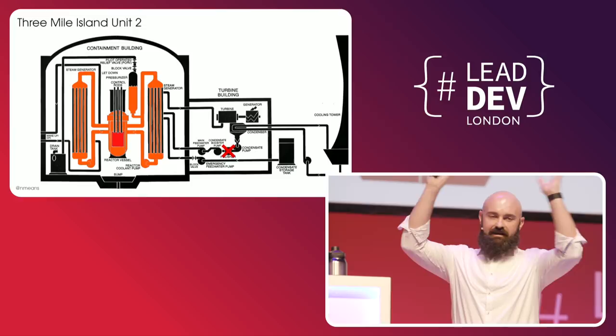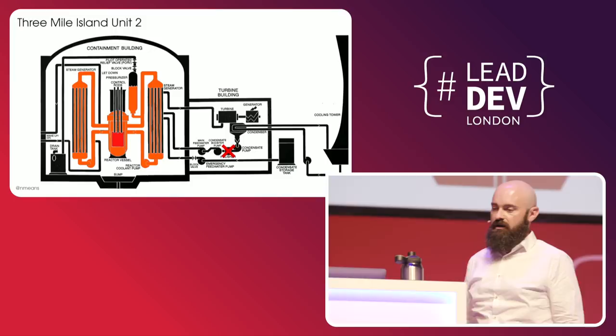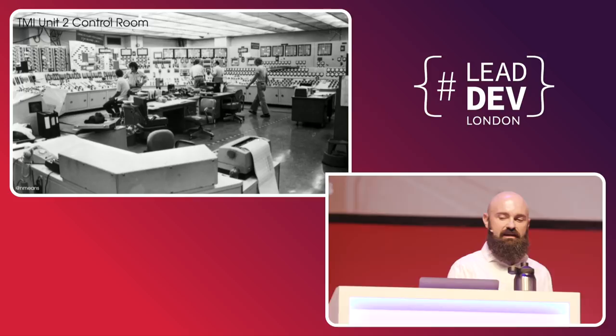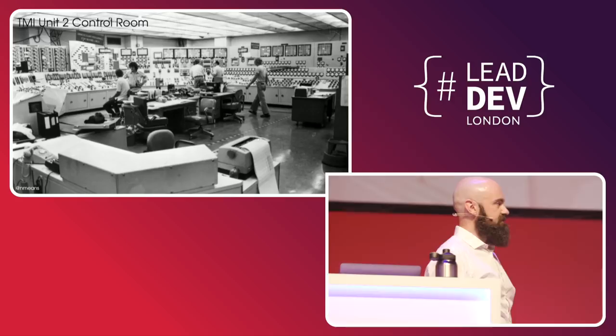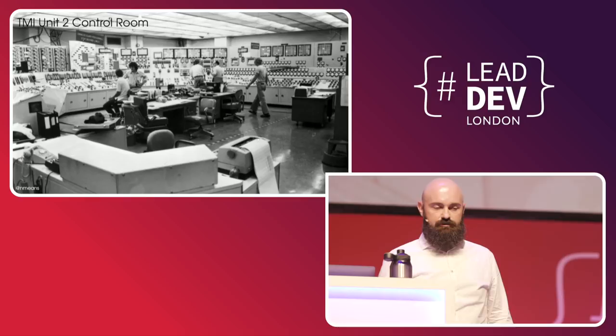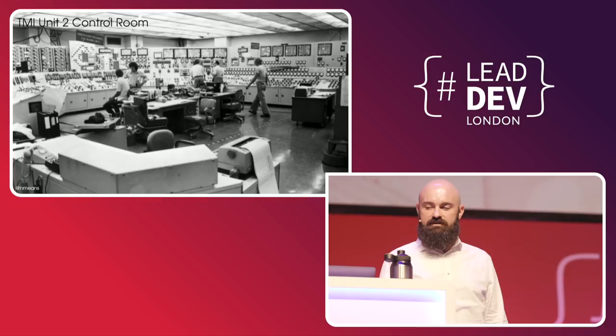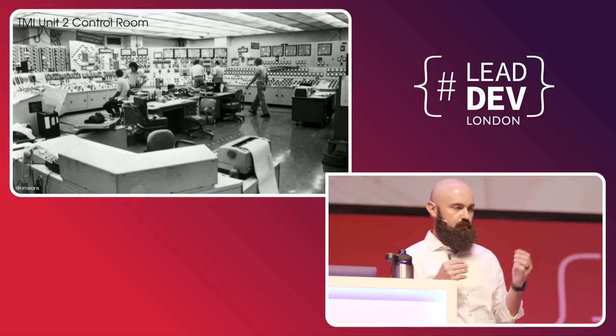In the control room, Ed Frederick and Craig Faust are getting their first indications that something has gone awry. An alarm horn announcing the turbine trip starts going off, and several alarm indicators start to flash. A few seconds after the turbine and generator alarms go off, the pressure in the reactor vessel is starting to climb rapidly. The good thing is this pressure spike is expected — the reactor is designed to cope with just such an event. Without the secondary loop to remove heat, the primary loop heats up, and when water heats up it expands, so it's natural that the pressure is going to go up. The reactor immediately kicks in systems designed to counteract this pressure spike.